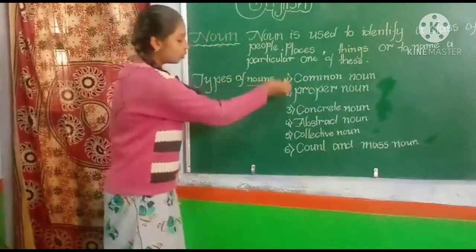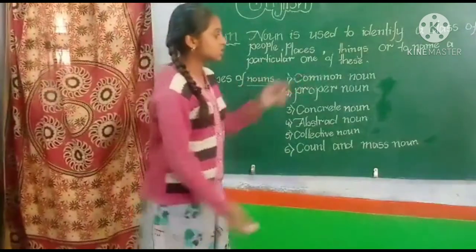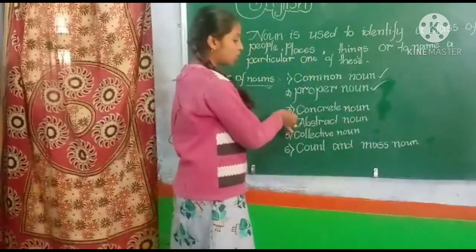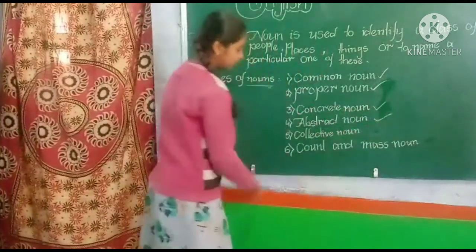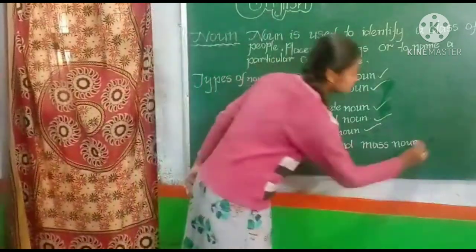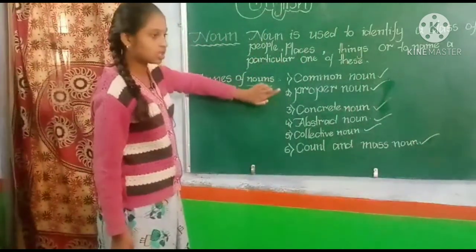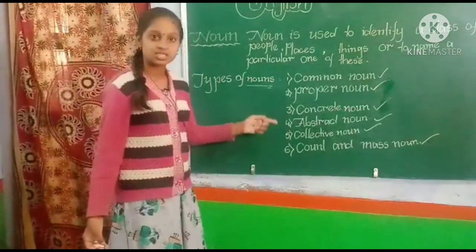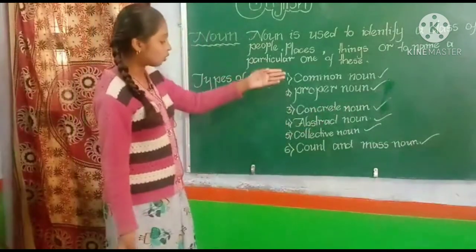Next, in the noun we have six different types. Let's see what they are. The first one is common noun, the second is proper noun, the third is concrete noun, the fourth is abstract noun, the fifth is collective noun, and the sixth is count and mass noun. Now let me explain all six nouns.